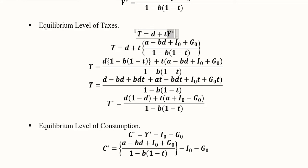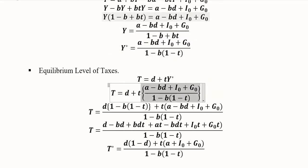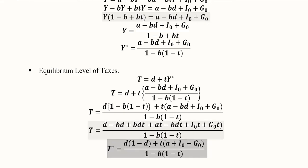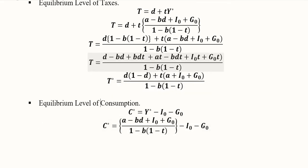We substitute the equilibrium value of Y* found in the previous step into the tax equation. Taking the LCM and simplifying, we arrive at the equilibrium level of tax T*.